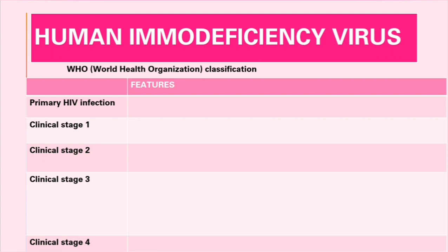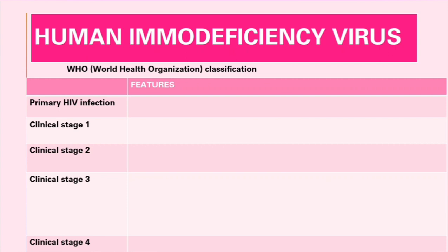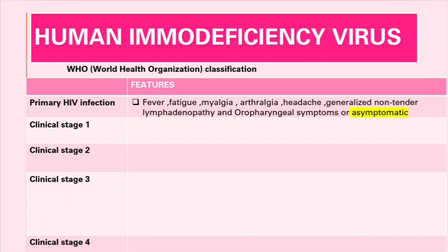According to the WHO classification, HIV infection is classified into five groups: primary HIV infection, and clinical stages one through four. Primary HIV infection is characterized by fever, fatigue, myalgia, arthralgia, headache, generalized non-tender lymphadenopathy, and oropharyngeal symptoms like sore throat. However, this phase can be asymptomatic in most cases.